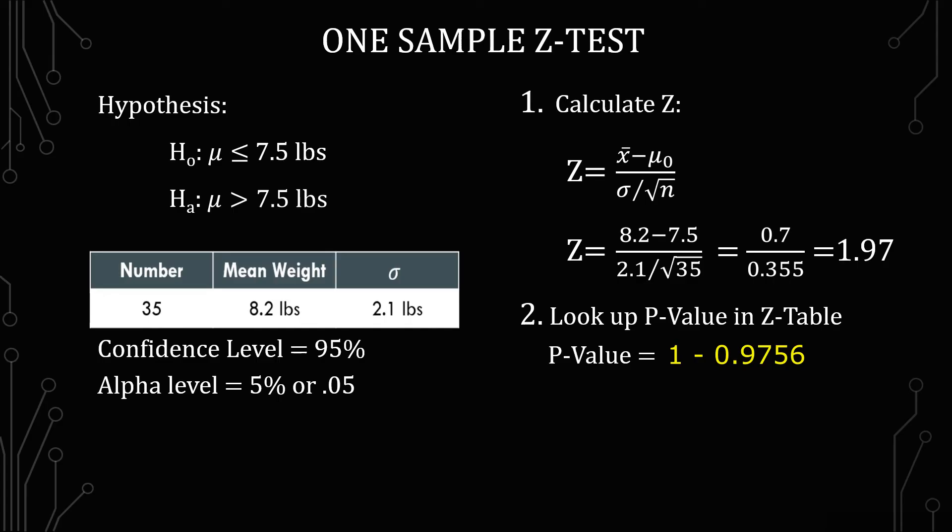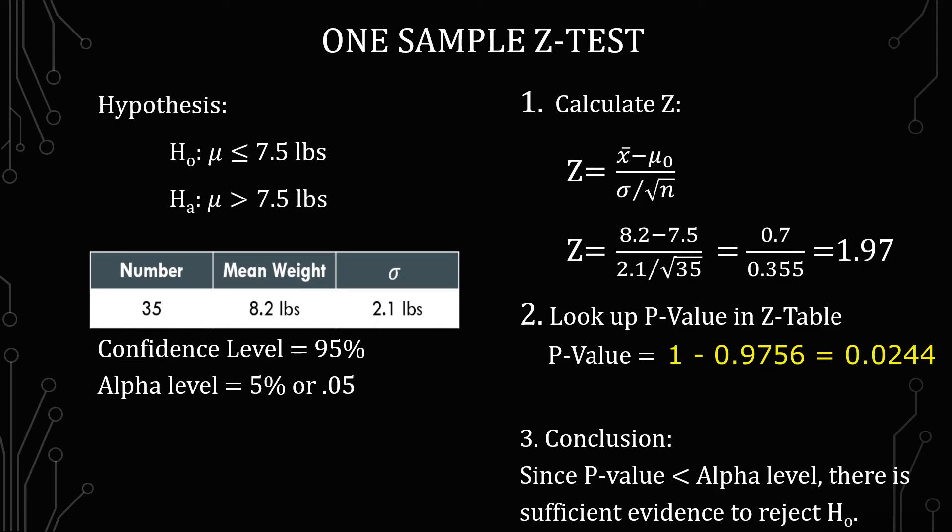For the conclusion, since the p-value is less than the alpha level, there is sufficient evidence to reject the null hypothesis, which is to say, the evidence does not suggest the average weight of newborns is less than or equal to 7.5.